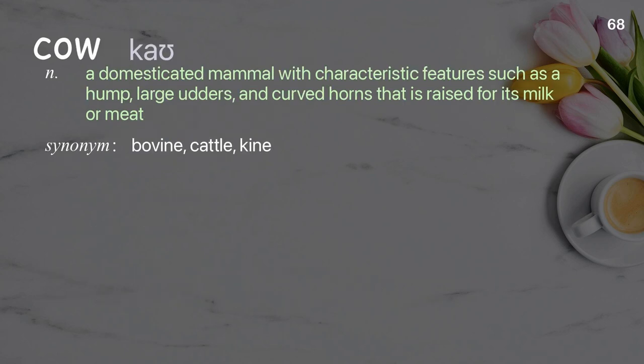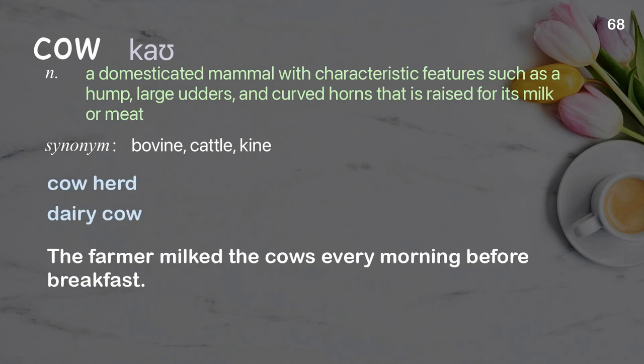Cow: a domesticated mammal with characteristic features such as a hump, large udders, and curved horns, that is raised for its milk or meat. Examples: cow herd, dairy cow. The farmer milked the cows every morning before breakfast.